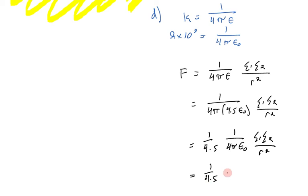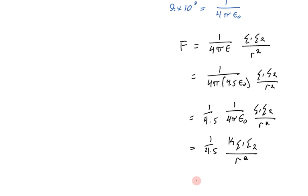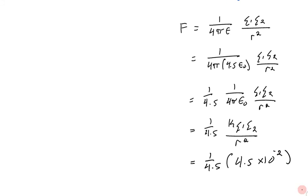Which brings us back to k, q1, q2 on r squared, which we know the value of. We calculated it in part C. So this is 1 on 4.5 of 4.5 times 10 to the negative 2. That was our answer from the previous section, which comes to 1 times 10 to the negative 2 newtons.